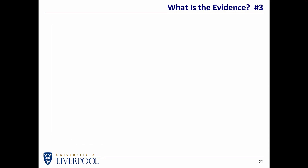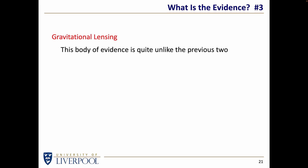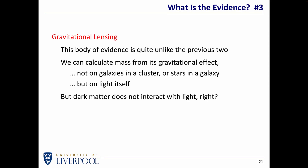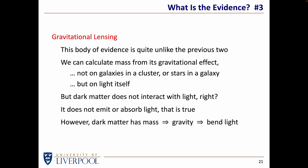Let's look at a third strand of evidence — gravitational lensing. It's quite unlike the other two, because we can calculate mass from its gravitational effect on light itself. Dark matter does not interact with light — it doesn't emit light and it doesn't absorb light. But dark matter has mass, and mass generates gravity which can bend light. Therefore, dark matter can cause light not to follow straight lines, but to bend through space — or, as Einstein would think of it, distorting space-time.